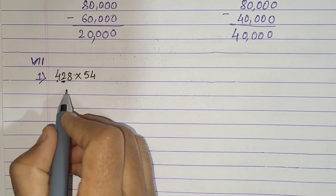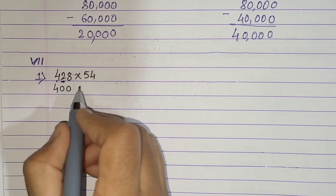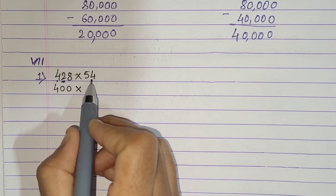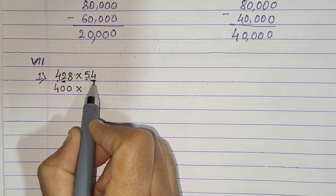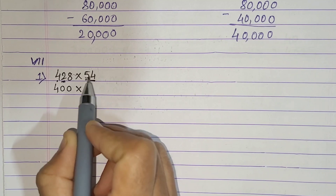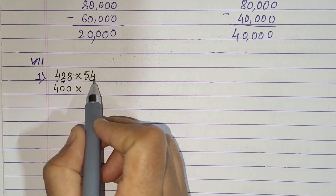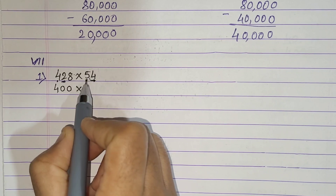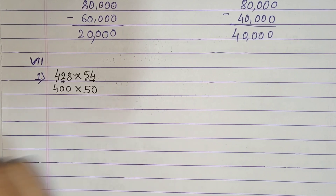So here the digit at the 10s place is 8 — we replace it with 0, and keep 4 at the 100s place unchanged, giving 400. Now for 54, the highest place is 10. We observe the unit digit. The unit digit is 4, which is 1, 2, 3, or 4, so we replace the unit by 0 and keep the 10s digit unchanged. So 54 rounded off becomes 50.